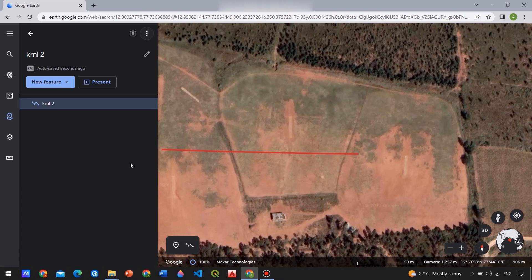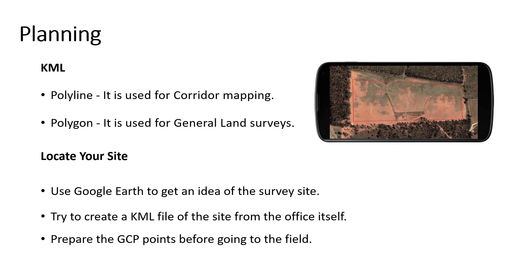Similarly, you can export the polygon file. Before going to the field, make sure that you follow these points. You can use Google Earth to view the field beforehand and get an idea of the field — the nature of the field, how it looks, etc. After viewing the field, try to create the KML file from the office or home itself, so that you will save time and it will also help if there is no internet connectivity in the field area.